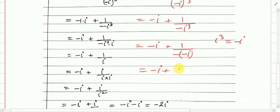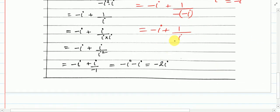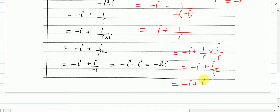So I get minus i plus 1/i, because minus × minus = plus. Now you should not have i in the denominator, so multiply by i/i. You get minus i + (1 × i)/(i × i). So minus i, then 1 × i = i on top, and i² = minus 1 at the bottom — so i divided by minus 1 = minus i. Therefore minus i minus i gives minus 2i.